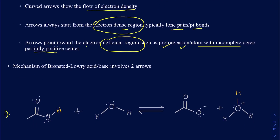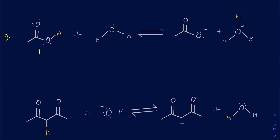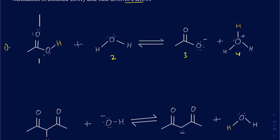When drawing mechanisms for Brønsted-Lowry acid-base reactions, there are going to be two arrows. Before drawing those arrows, you want to make sure you can identify what your acid and base are, as well as the conjugate acid and conjugate base. One way to do this is to pair each reactant with what it becomes on the product side — so figure out what chemical 1 turns into, which is compound 3, and determine what the difference is between them.